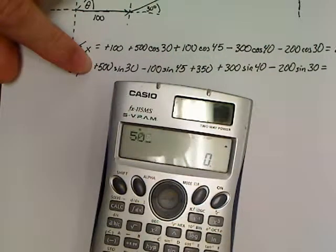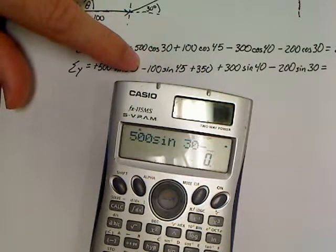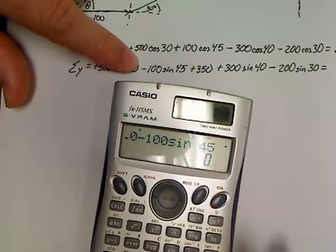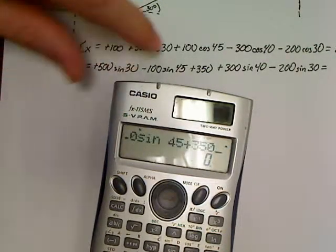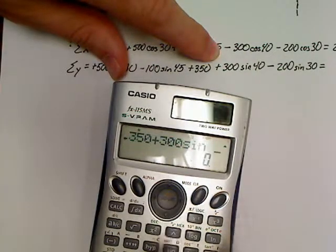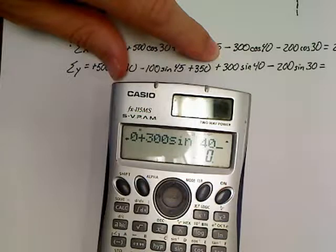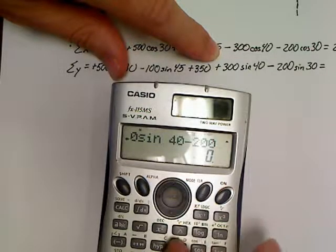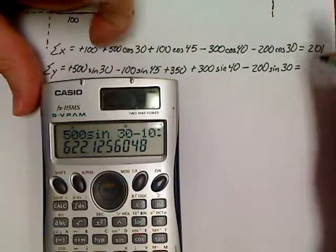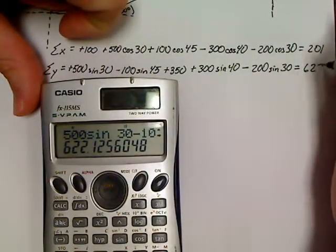And then for our y's, we've got 500 sine 30, which we could have done that in our head. Minus 100 sine 45. Could have done that in our head. Plus 350 plus 300 sine 40 minus 200 sine 30 equals 622.